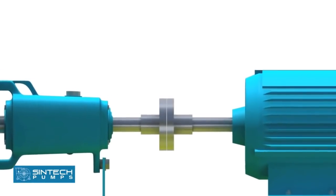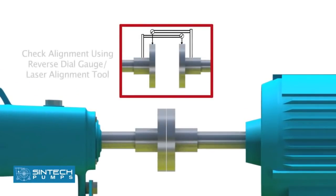In the subsequent step, the pump and the motor are aligned to the final tolerance using a reverse dial gauge or a laser alignment tool.